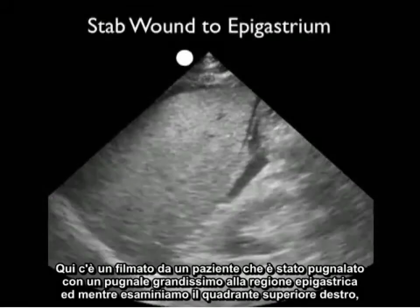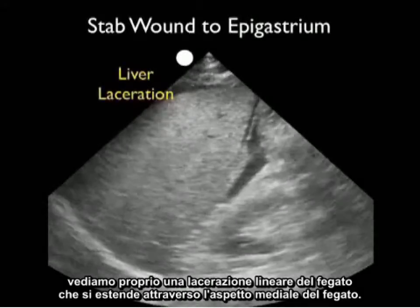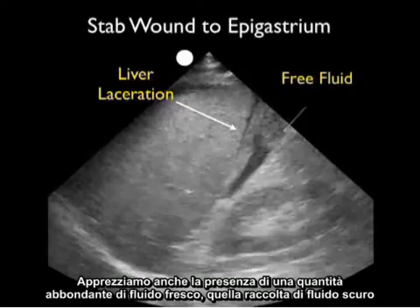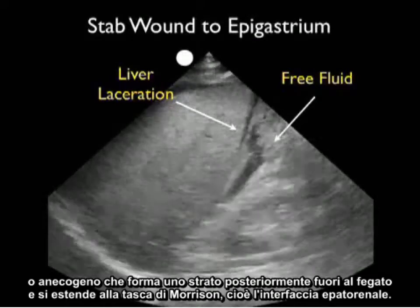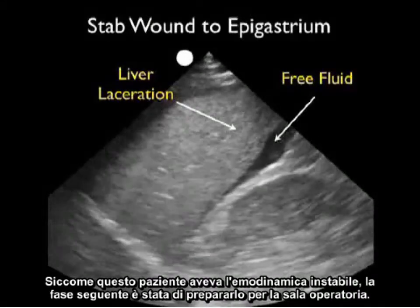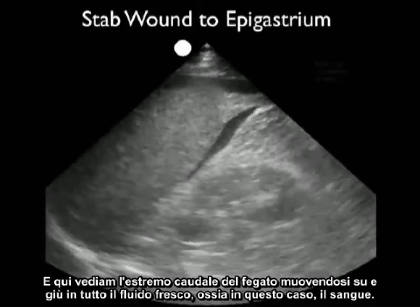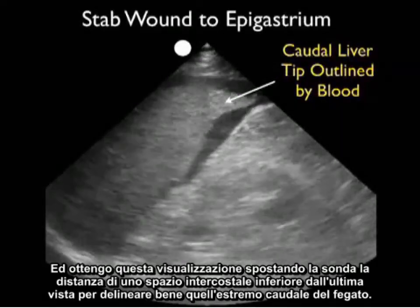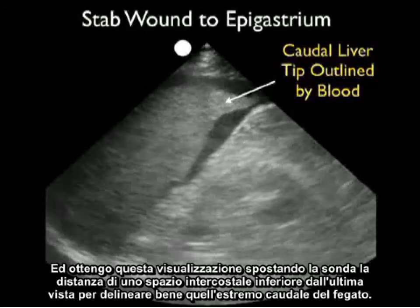Here's a video clip from a patient who was stabbed with a large knife to the epigastric region. As we look at the Right Upper Quadrant, we can see a linear liver laceration extending through the medial aspect of the liver. We also appreciate a large amount of fresh fluid — that dark or anechoic fluid collection — layering out posteriorly to the liver and extending into Morrison's pouch, the hepatorenal interface. As this patient had unstable hemodynamics, the next move was to package for the operating room. Moving the probe one intercostal space inferiorly, we can see the caudal tip of the liver waving around in all the fresh blood.